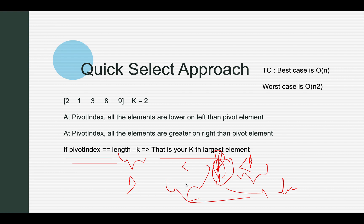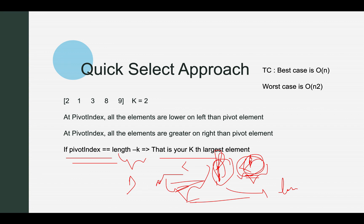Once you've found the element at index length minus k, you return it. You don't need the elements on either side to be internally sorted — they can remain unsorted. All that matters is that elements left of the pivot are less than it and elements right of it are greater. This is the Quick Select algorithm. Best case is O(n) and worst case is O(n²), depending on how you choose your pivot.